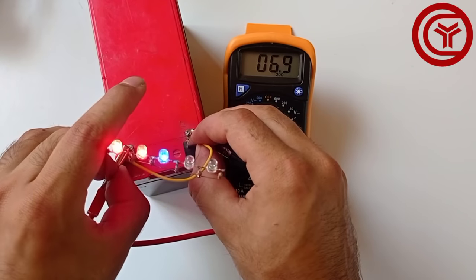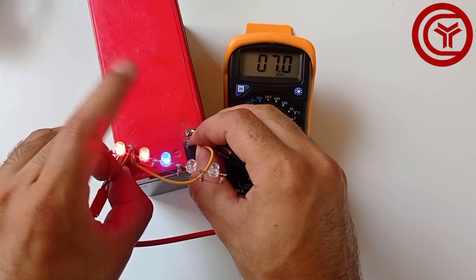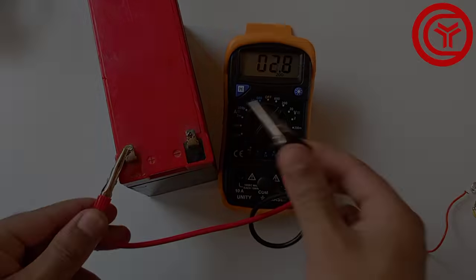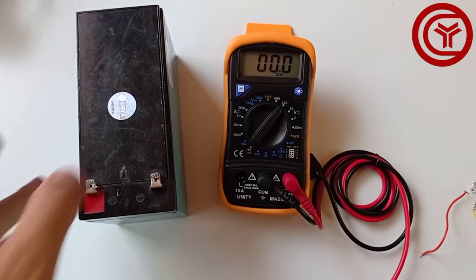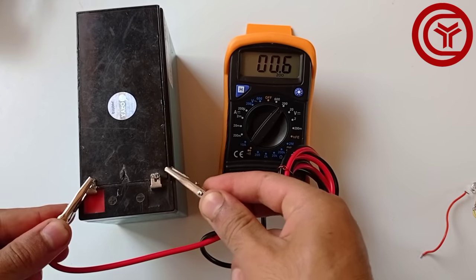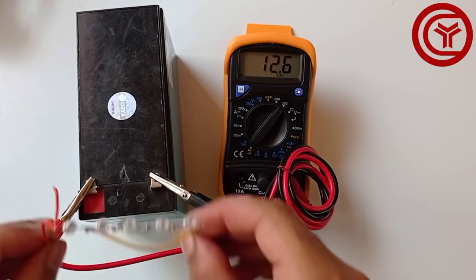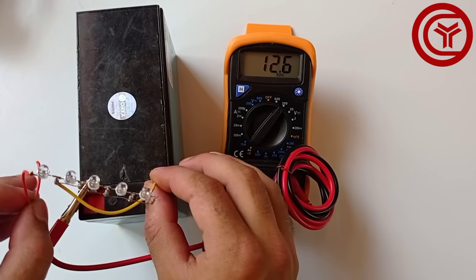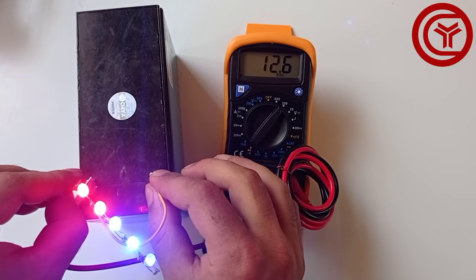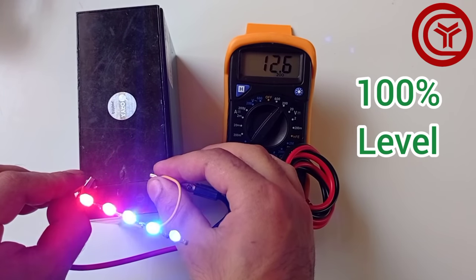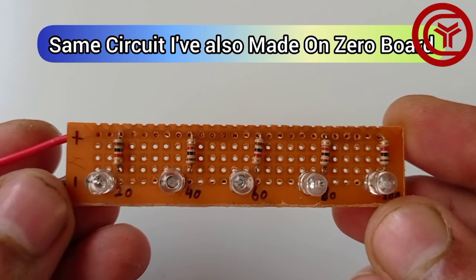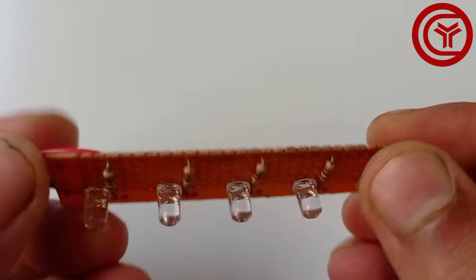You can see only 3 LEDs are glowing, means it has only 50 to 60% of charge left, that you can also see on multimeter.